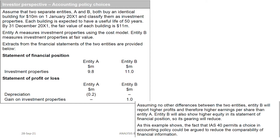As this example shows, IAS 40 permits a choice in accounting policy between the cost model and fair value model. Because of this, it becomes very hard to compare the two entities. Entity B shows higher profit, but that doesn't mean it is actually generating higher profit — it is just a reflection of the different accounting policy choices implemented. The comparison does not make sense, and this reduces comparability.